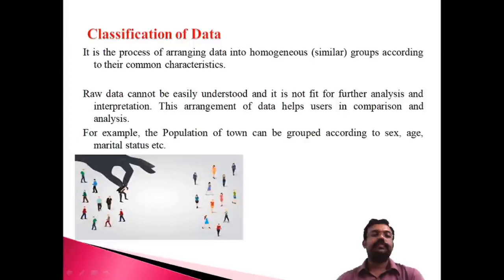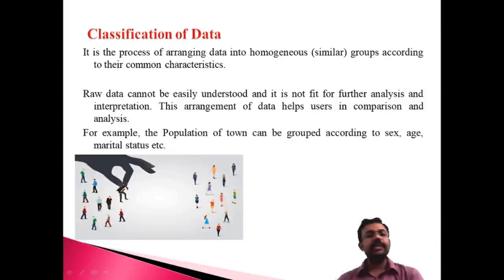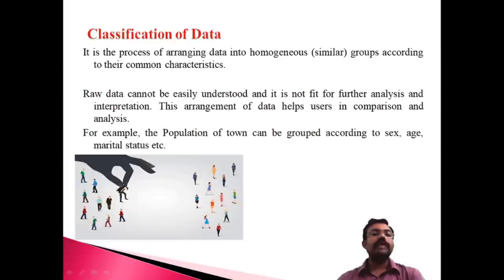After coding, the next important element is classification. Classification means arranging the data with similar characteristics — that is, arranging data of similar nature into common groups. For example, age can be classified into categories such as 30 to 45 and 45 to 60. Arranging homogeneous groups of data with common characteristics is the process known as classification.